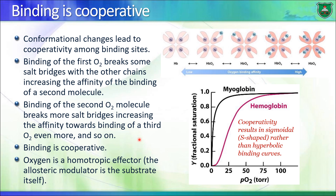A sigmoidal curve also indicates that binding is cooperative. Cooperativity means that binding of the first oxygen molecule to hemoglobin makes it easier for the second oxygen to bind, which makes it easier for the third, and in turn easier for the fourth. Binding of each successive oxygen increases the affinity for the next. This is what we mean by cooperativity in hemoglobin.